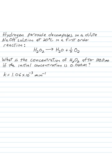So the first thing we want to do is just write down everything that we know here. We know the initial concentration of hydrogen peroxide. So we know that [H2O2]₀ is equal to 0.020 molar.